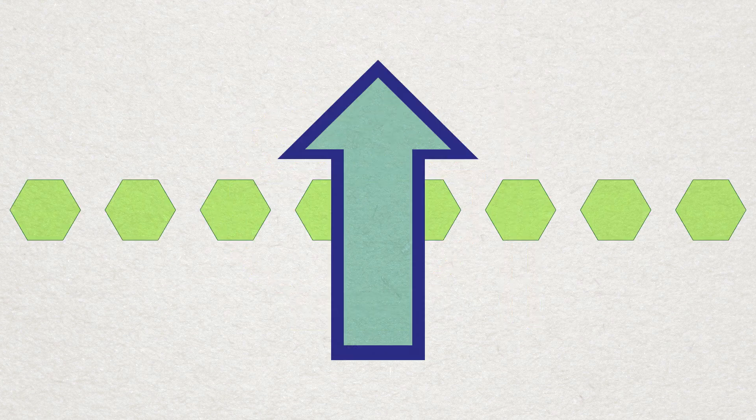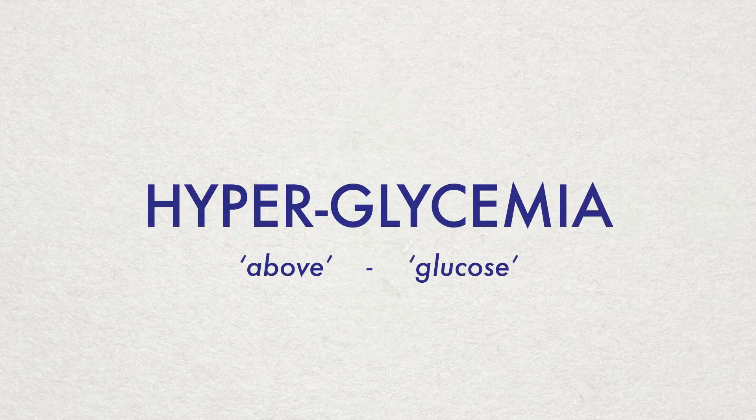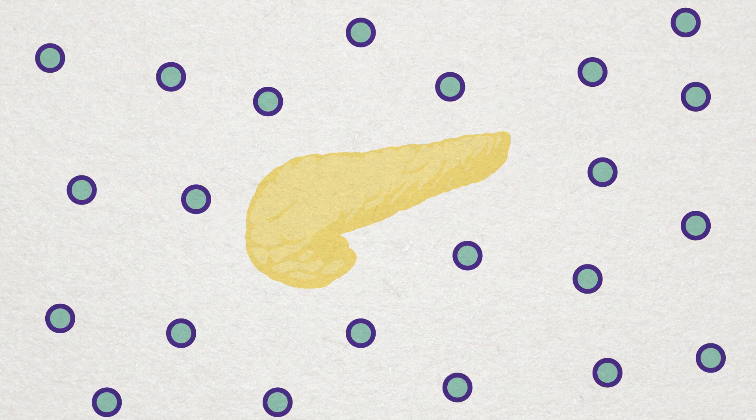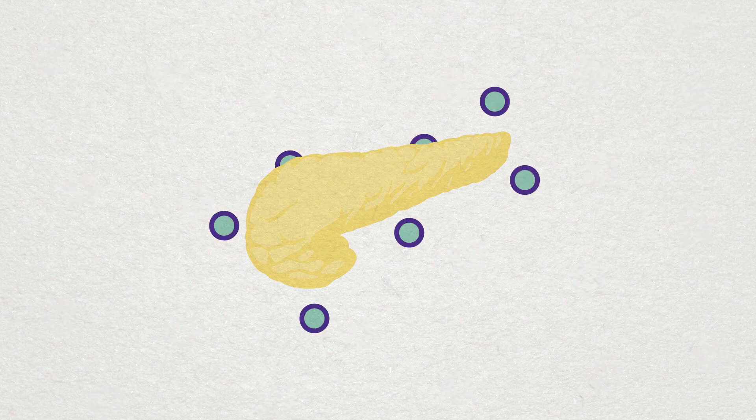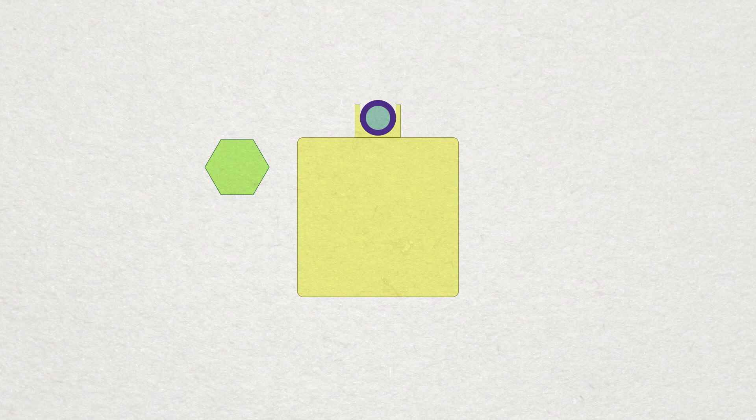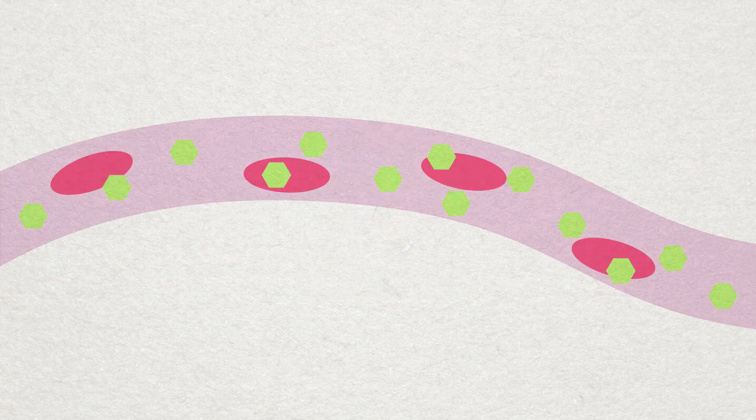Imagine you have just eaten a meal high in carbohydrates. This will cause you to have high blood glucose levels, also called hyperglycemia. As a response to this, beta cells in the pancreas secrete insulin. Insulin unlocks body cells so that glucose can enter into them, removing glucose out of the bloodstream and into body cells.